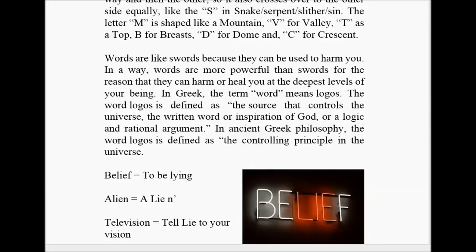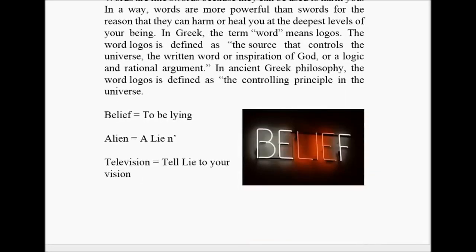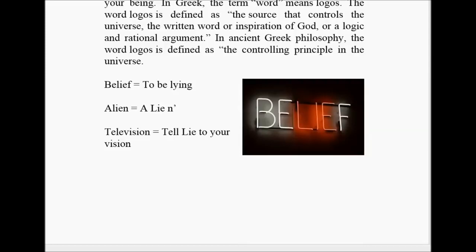In Greek, the term word means logos. The word logos is defined as 'the source that controls the universe, the written word or inspiration of God, or a logical and rational argument.' In ancient Greek philosophy, the word logos is defined as 'the controlling principle in the universe.' Belief includes the word 'lie' in it in the middle — to be lying. Alien — I, a lion. They're lying to you folks about the aliens. And then when you tell your vision, you tell your lie to your vision.